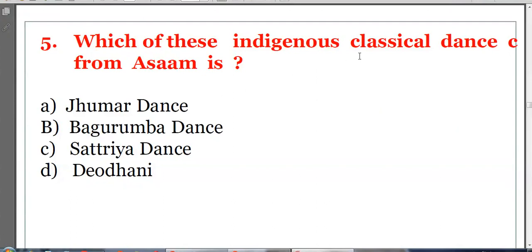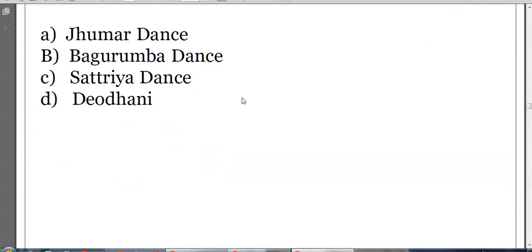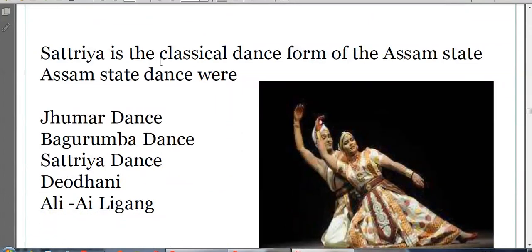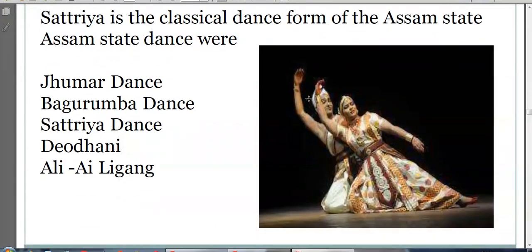Which is the indigenous classical dance form of Assam? Options: Ghumar dance, Bhagurumba dance, Satriya dance, or Jyoti dance. The answer is C, Satriya dance. Satriya is one of the eight Indian classical dance forms. Ghumar, Bhagurumba, Satriya, and Jyoti dance are all dance forms of Assam, but Satriya is the classical one.